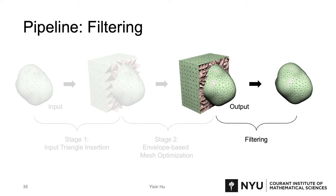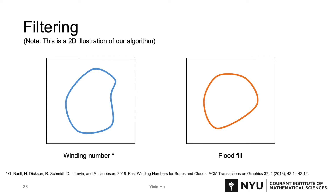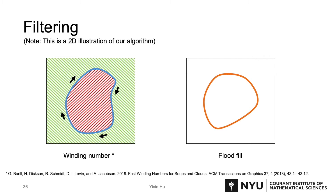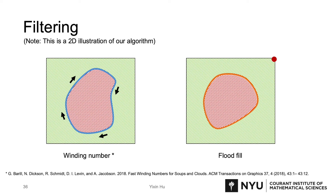After mesh improvement, we get our output with input approximated within an envelope. In the end, users can choose to filter out outside elements. We provide two options. The first option is winding number, which requires correct input surface orientation. The other option is flood fill, which does not require the input surface to be well-oriented, but does require the input to be closed.